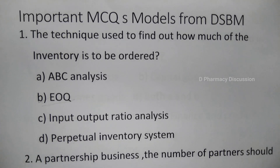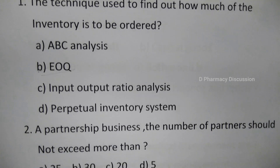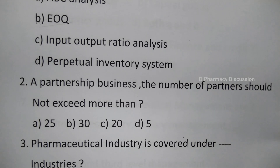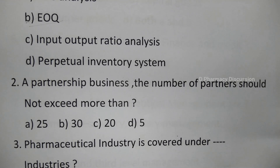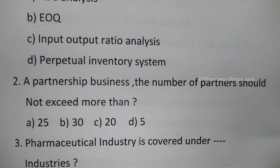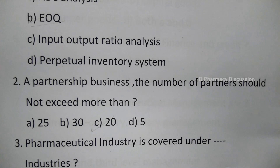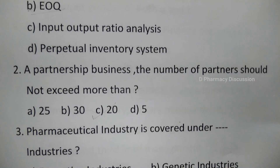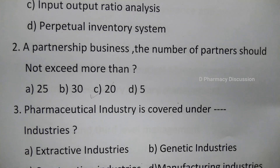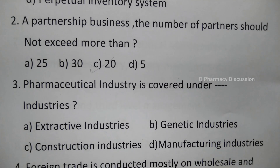Question 2: In a partnership business, the number of partners should not exceed more than — options are A: 25, B: 30, C: 20, and D: 5. The correct answer is option C, 20.